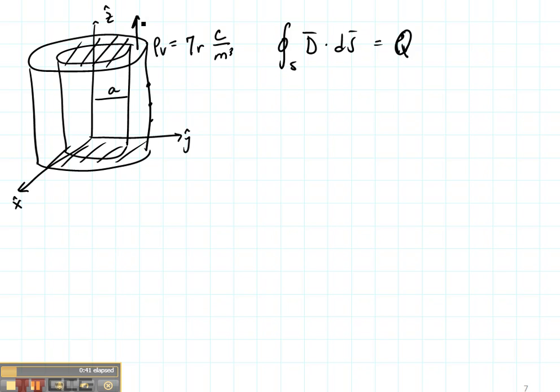On the top, my electric flux is coming out and on the bottom, an equal amount of electric flux is coming out in the opposite direction. The top and the bottom, because of symmetry, are always going to cancel out.